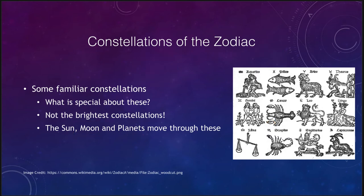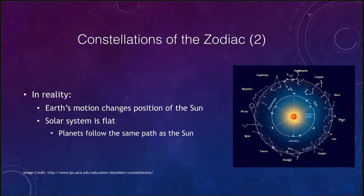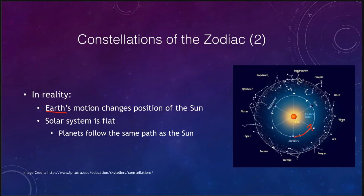What is really happening, if we look at reality, is that the sun and the moon and the planets are not moving through those constellations — what is actually moving is the Earth. So the Earth's motion is changing the apparent position of the sun. In January, we see the sun towards the constellation of Sagittarius. A few months later, we would instead see Aquarius, and then a couple months later Aries, repeating this cycle every year.